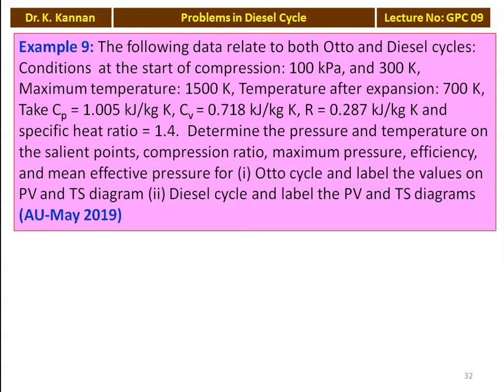Example number 9 from the May 2019 question paper. The following data relates to both Otto and Diesel cycles — conditions at the start of compression: 100 kilo Pascal, 300 Kelvin; maximum temperature: 1500 Kelvin; temperature after expansion: 700 Kelvin. Take Cp equals 1.005, Cv equals 0.718, R equals 0.287 kilojoules per kilogram Kelvin, gamma equals 1.4. Determine pressure, temperature at salient points, compression ratio, maximum pressure, efficiency, and mean effective pressure for (1) the Otto cycle and (2) the Diesel cycle, labeling values on PV and TS diagrams.